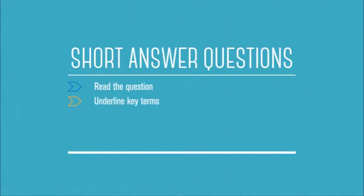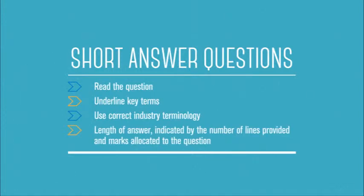When looking at short answer questions, it's important to consider two things: the number of lines given to answer and the marks allocated. That will give you an indication of how much writing you need to do and what detail to include. For a two-mark question, it might only require a list or description — you might just need to list two things. For a six-mark question, you might have to give a cause and effect for what the question is asking.